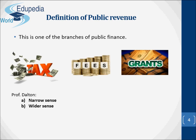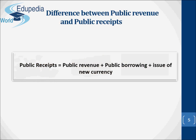Now let's find out the difference between public revenue and public receipts. Public revenue includes that income which is not subject to repayment by the government. Public receipts include all the income of the government including public borrowing and issue of new currency. In this way, public revenue is a part of public receipts. So: public receipts equals public revenue plus public borrowing plus issue of new currency.